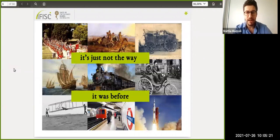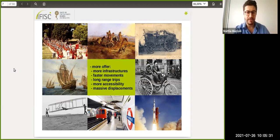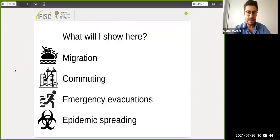This is reflected in interdisciplinary literature—papers on travel restrictions, immigrant integration, tourist site attractiveness, traffic tolls to reduce congestion in big cities. Mobility has evolved significantly. Two thousand years ago, it took days to march from Rome to other Italian cities. Nowadays we have much more infrastructure, faster movements, long-range trips, much more accessibility, and massive displacements connecting the world. In this thesis, I will show four different applications: migration, commuting, emergency evacuations, and epidemic spreading.